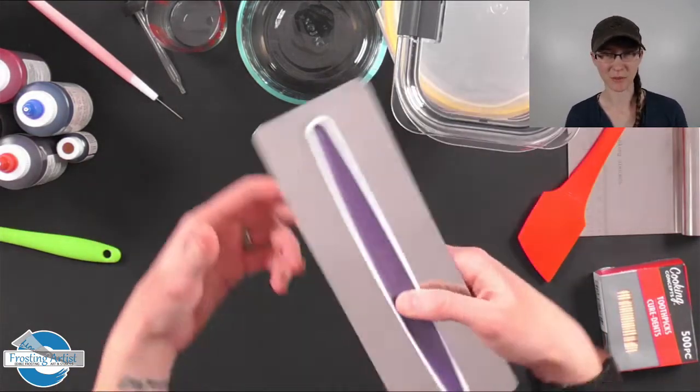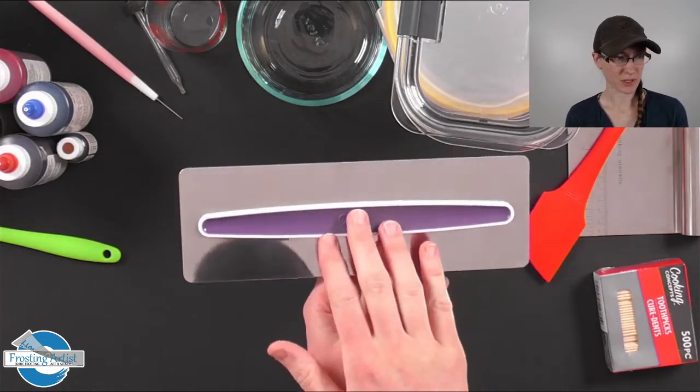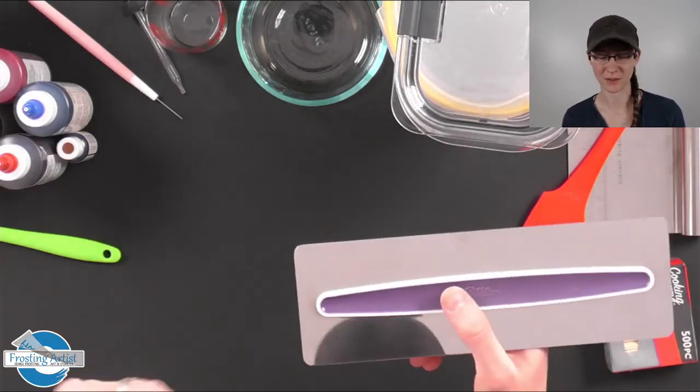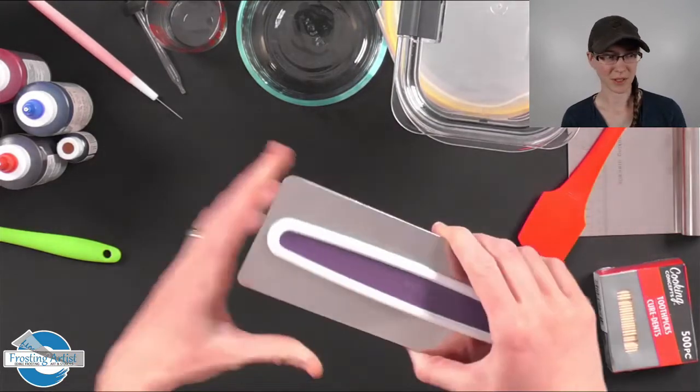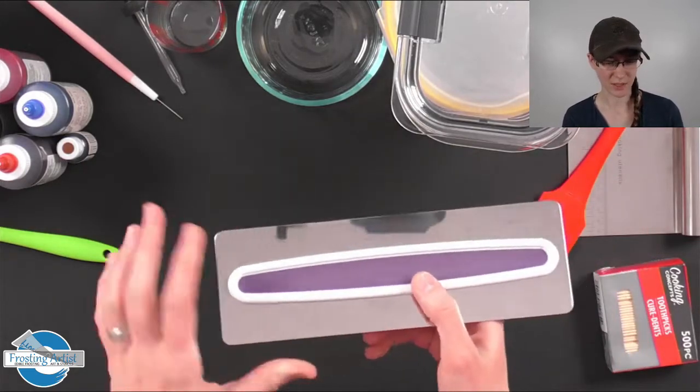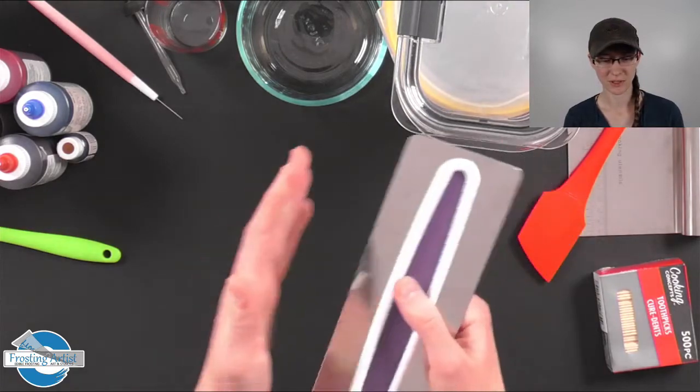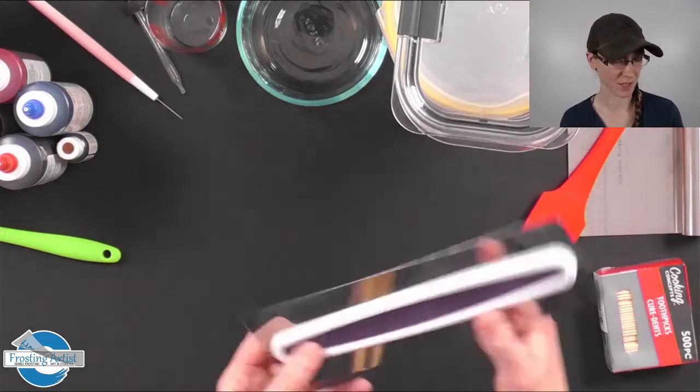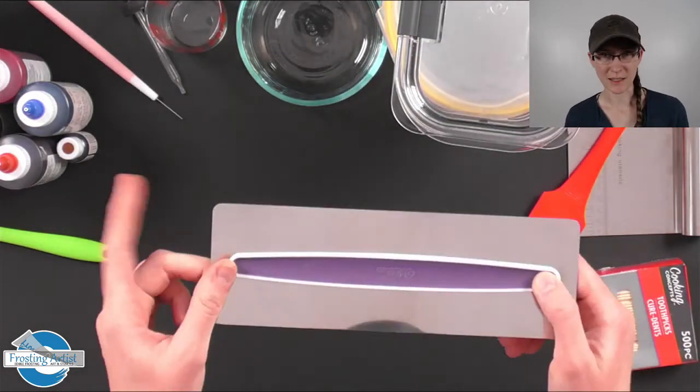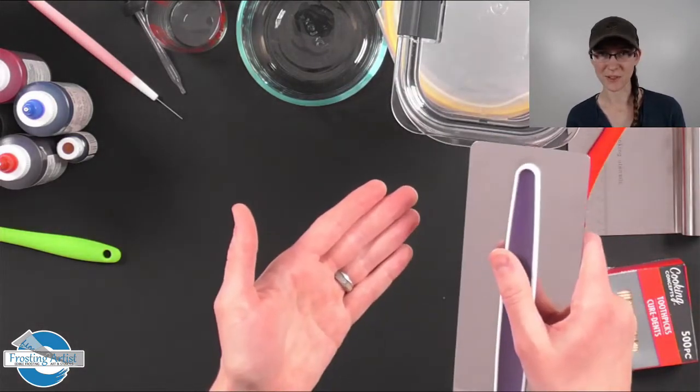Another important tool will be your scraper. This one is the Wilton icing smoother. This is my favorite one to use. It is a bit large, so if you're not a cake decorator and you only do cookies it may seem a little bit on the large side. But in the long run you will appreciate the length of this because some of the stencils do require you to have quite a long edge there, which makes it a lot easier.